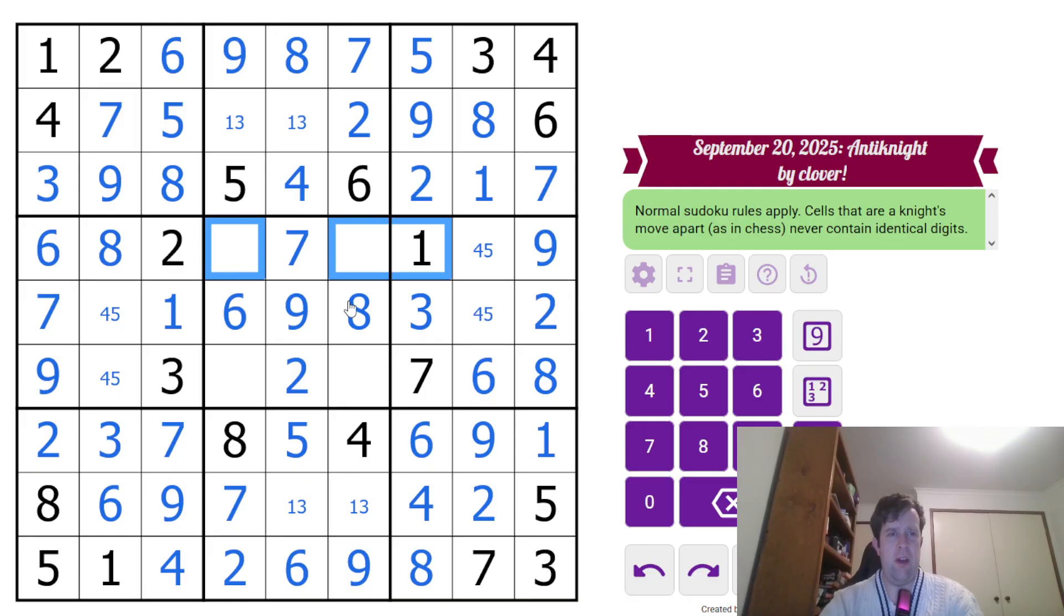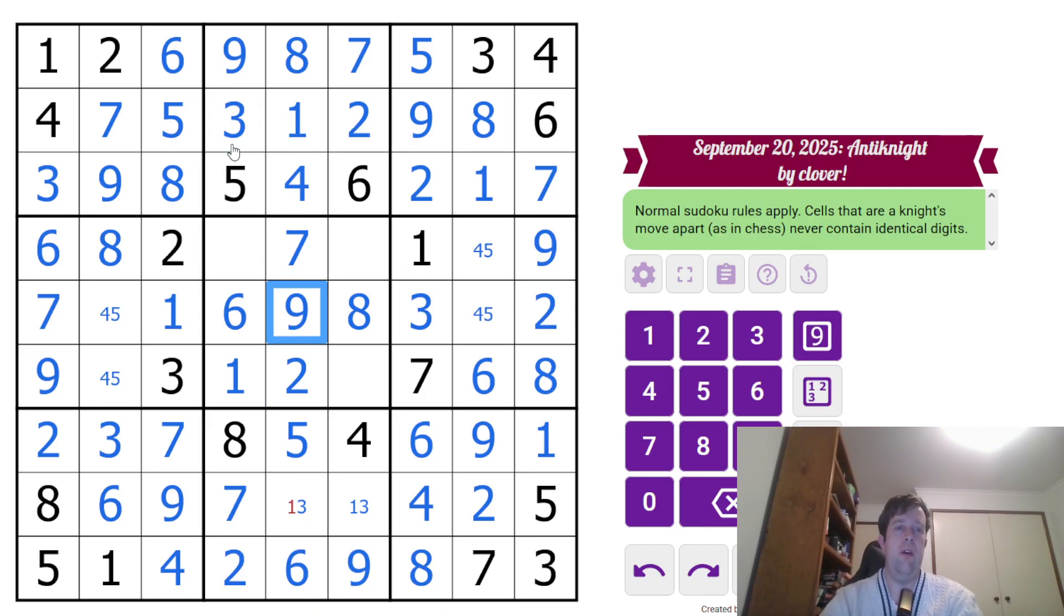One sees that cell, that cell, and that cell. So that one via anti-knight. So three, one. Three, one. And then this sees a four, so that's a five, four, five, four, five. And then three and four. That's it.